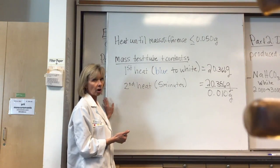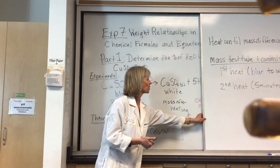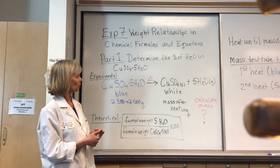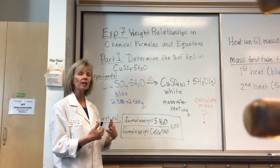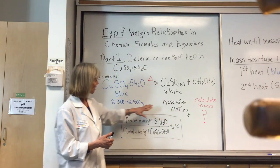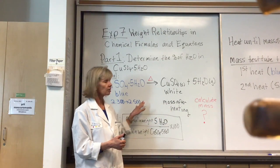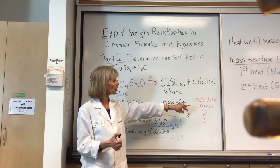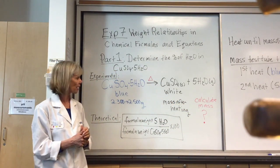Now we have the mass of our compound after heating — generally after two heatings is sufficient. We have the mass of the sample before heating and the mass after heating. The difference between these two numbers is the mass of water. With the mass of water and the mass of the original sample, we can calculate the percent of water in copper sulfate pentahydrate.